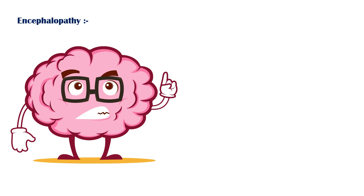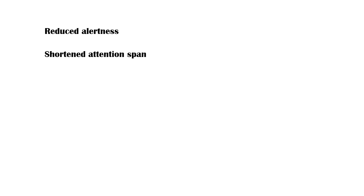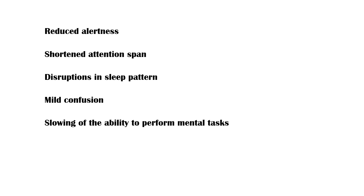Encephalopathy. When the liver fails to detoxify substances such as ammonia, they build up in the blood and cross over to the brain. This is called hepatic encephalopathy. It is characterized by reduced alertness, shortened attention span, disruptions in sleep pattern, mild confusion, slowing of the ability to perform mental tasks, and mood or personality changes.